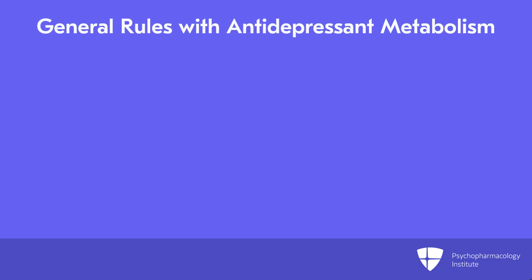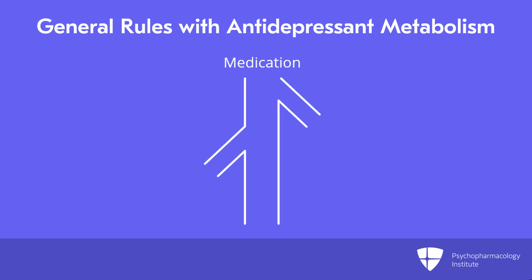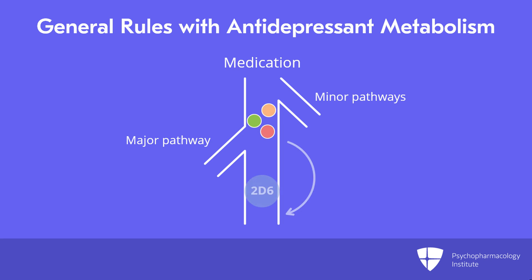There are some general rules or observations with antidepressant metabolism. Typically, a medicine has several metabolism pathways — usually one is a major pathway and the others are minor pathways — and sometimes metabolites might undergo different pathways. Pharmaceutical companies have noticed this and produced medicines that can bypass the 2D6, such as desvenlafaxine, which is Pristiq, which really bypasses 2D6.